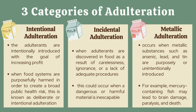Intentional adulteration is where adulterants are intentionally introduced with the goal of increasing profit. When food systems are purposefully harmed to create a broad public health risk, this is known as deliberate or intentional adulteration. Incidental adulteration occurs when adulterants are discovered in food as a result of carelessness, ignorance, or lack of adequate procedures. For metallic adulteration, it occurs when metallic substances such as arsenic, lead, and tin are purposely or unintentionally introduced. For example, mercury-containing fish may lead to brain damage, paralysis, and death.